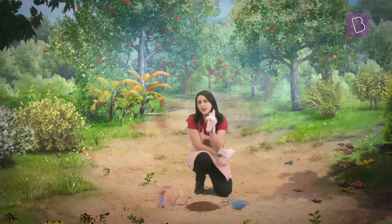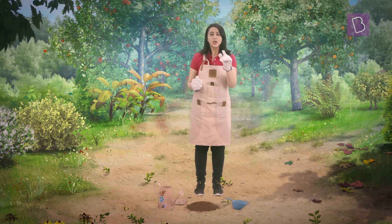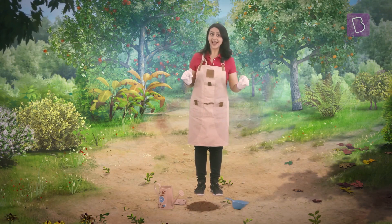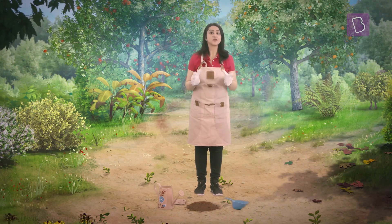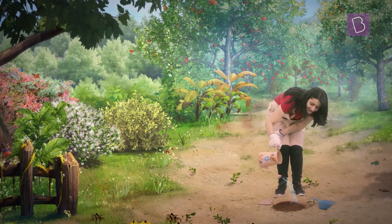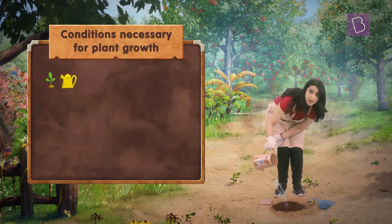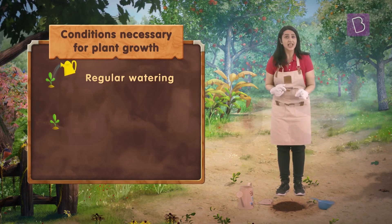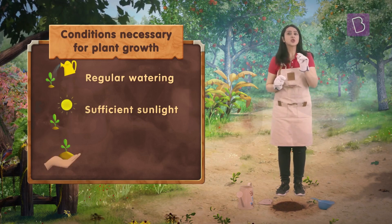Just planting saplings or sowing seeds is not enough. You can think of them as small babies — just like babies are treated with love and care, in the same way we must take good care of sown seeds or small plants. When we sow seeds to grow a plant, we must regularly water them and ensure that they are getting proper sunlight. We must also check if the soil is suitable for those seeds.